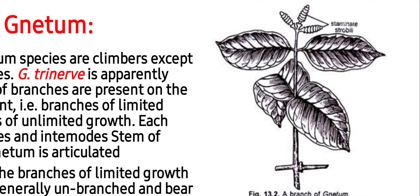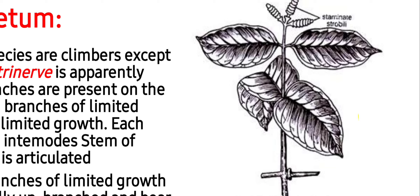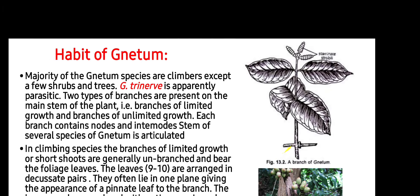The leaves are present opposite to each other in pairs and often lie in one plane, giving the appearance of a pinnate leaf to the branch. The leaves are large and oval with entire margins and reticulate venation, as also seen in dicotyledons. Some scaly leaves are also present. The reticulate venation arises from the unicostate midrib.